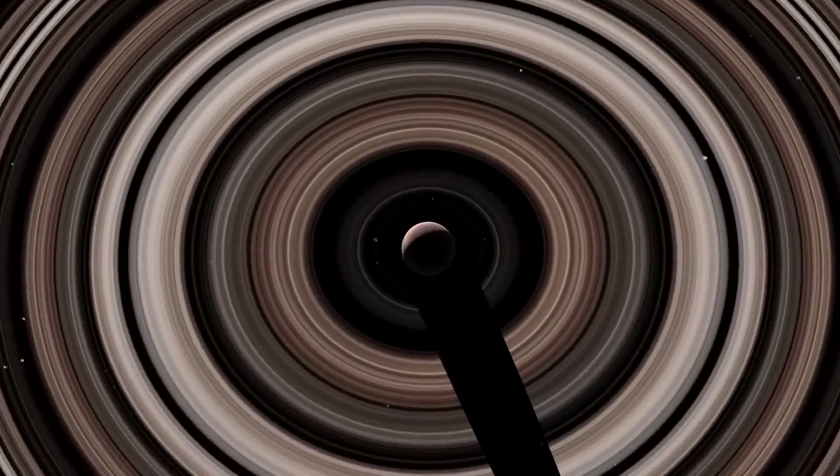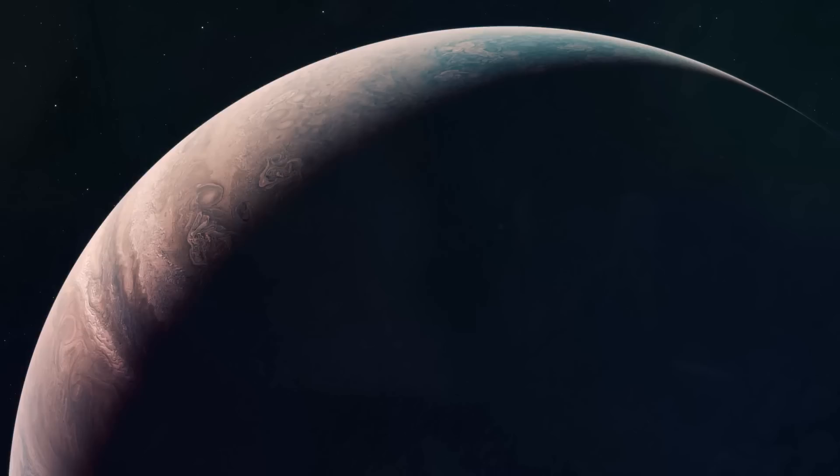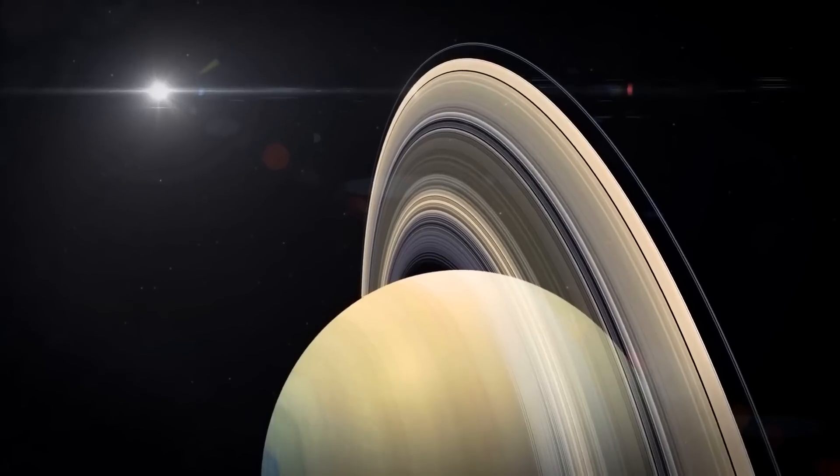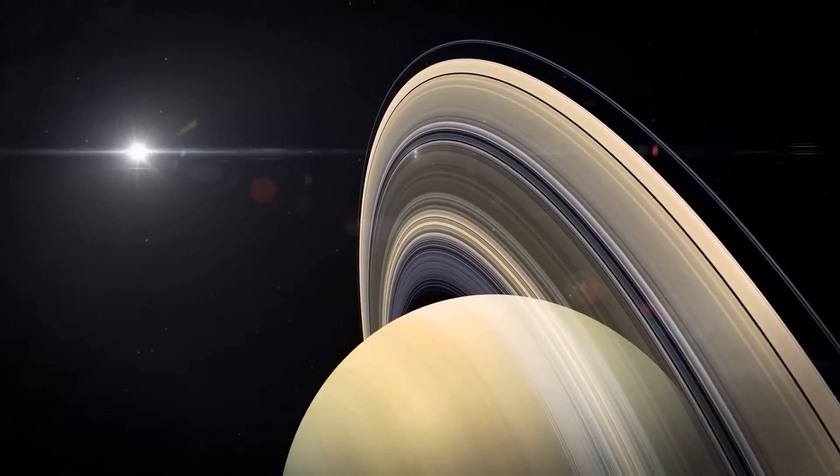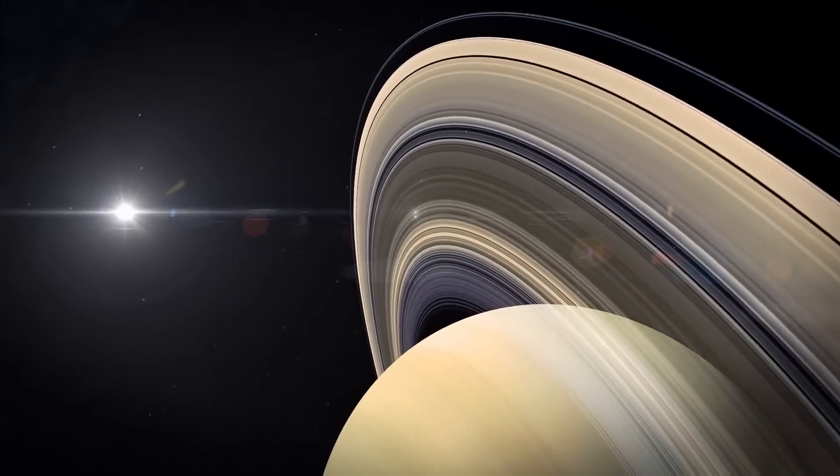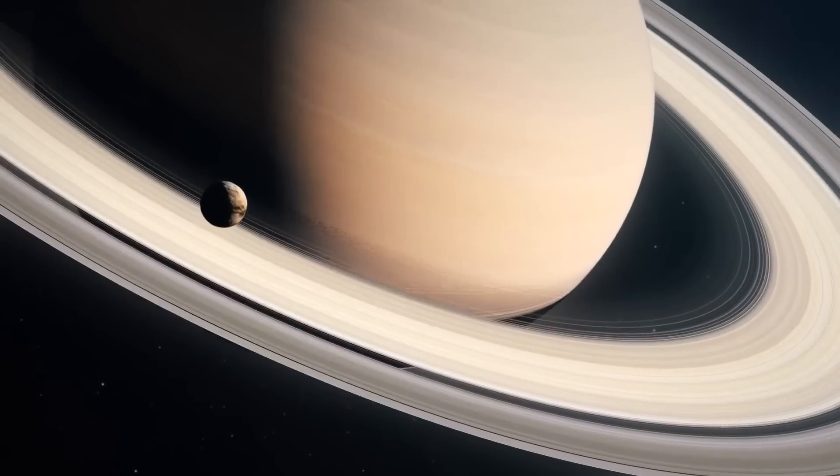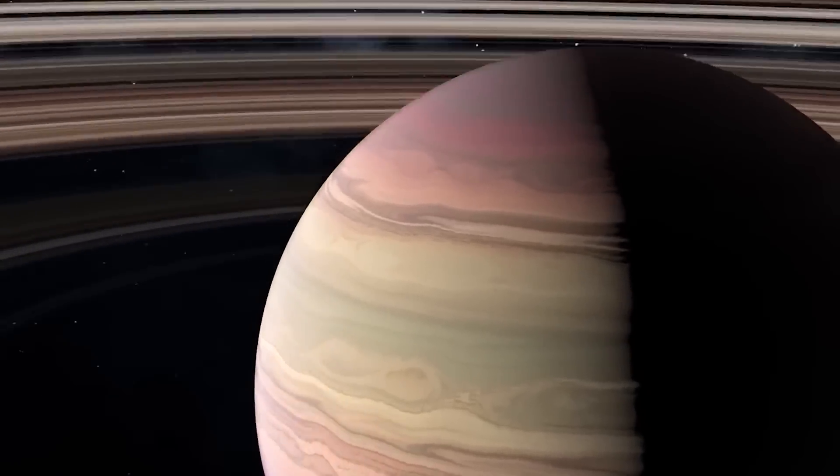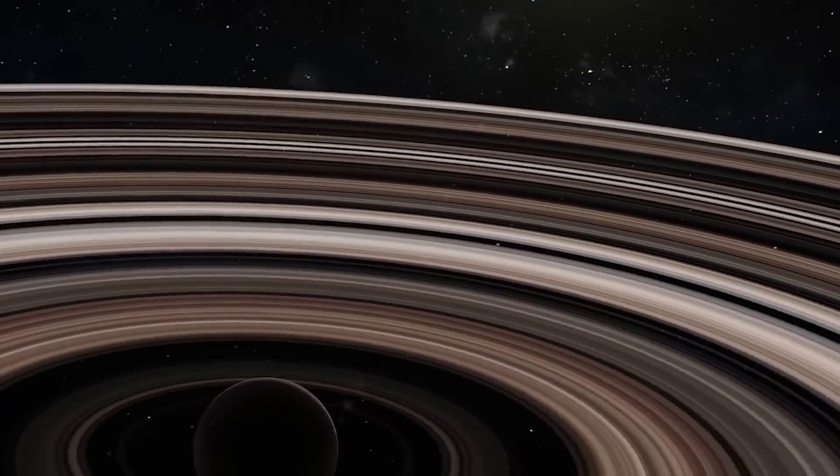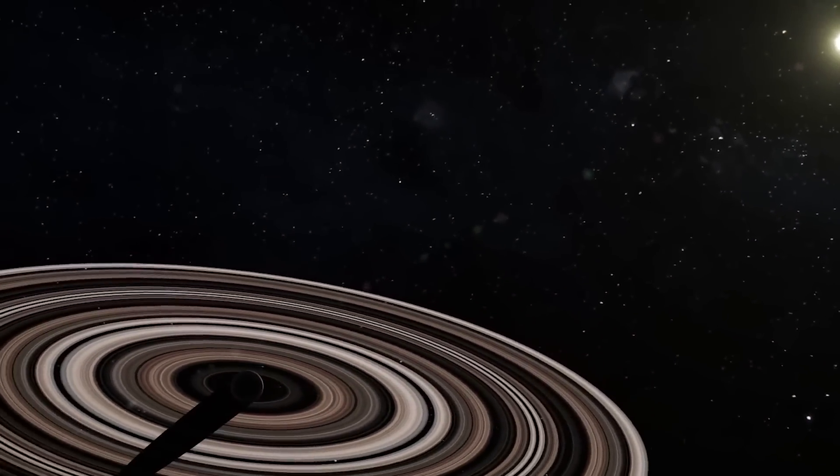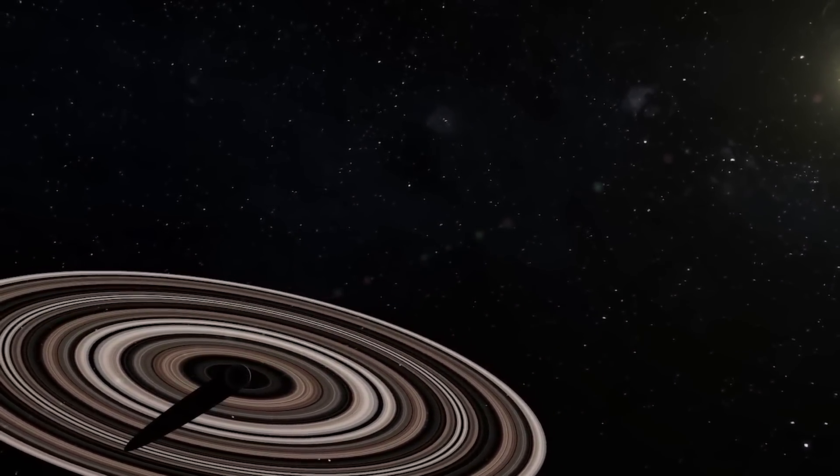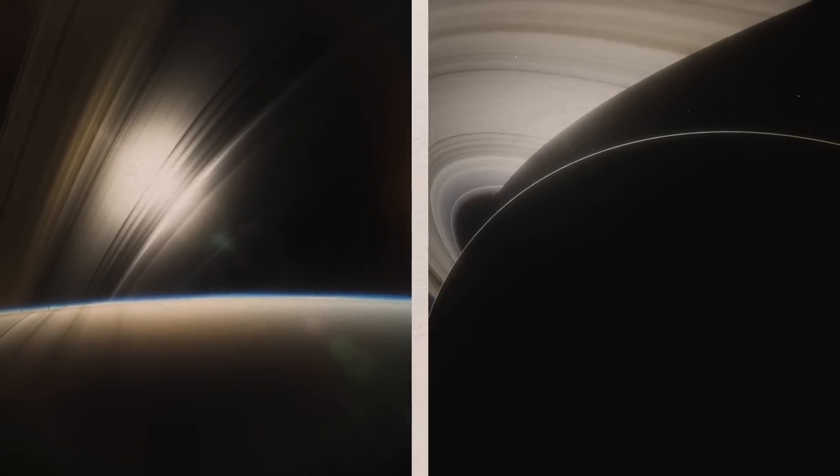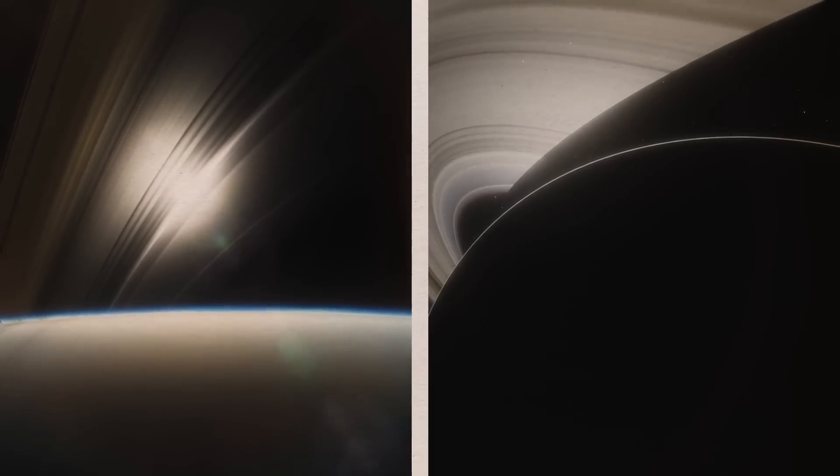Additionally, J1407b is a huge planet that dwarfs the largest planet in our solar system in size. Scientists were astounded by the planet's massive ring system. It is made up of 30 rings, each with a diameter of tens of millions of kilometers. Rough calculations indicate that the total ring system has a diameter of 120 million kilometers, that's 74.5 million miles. This is 200 times bigger than Saturn's rings.